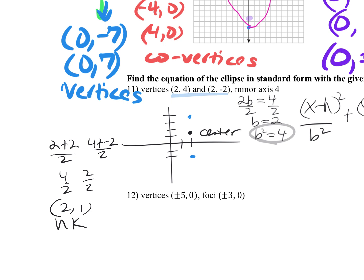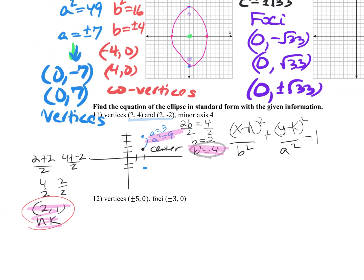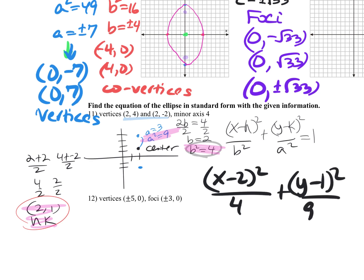The distance from the center to the vertex is 3 spaces, so a equals 3 and a-squared equals 9. Filling in a-squared, b-squared, and my (h, k), I'm done. My final answer is: (x minus 2) squared over 4 plus (y minus 1) squared over 9 equals 1.